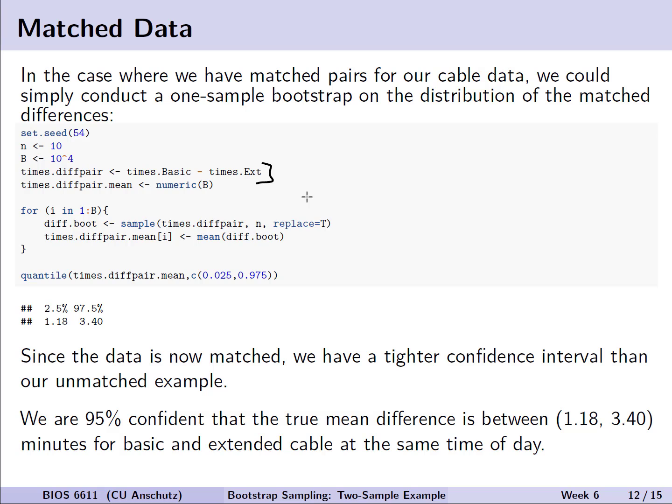We will then implement our bootstrap of 10,000 and calculate our 95% bootstrap percentile interval. In this case, since the data is matched, we have a tighter confidence interval than our unmatched example, so note that it's 1.18 to 3.40, which is a little tighter than we saw in the previous slide. And in this case, we would conclude very similarly that we are 95% confident that the true mean difference is between 1.18 to 3.40 minutes for basic and extended cable at the same time of day.